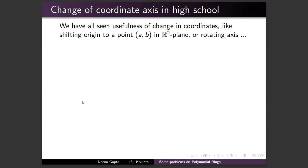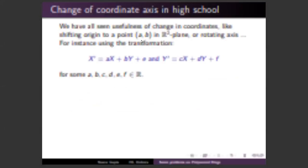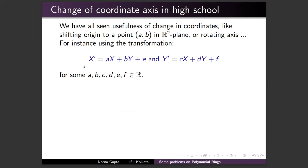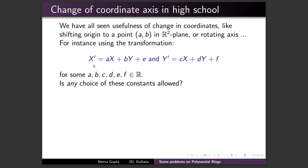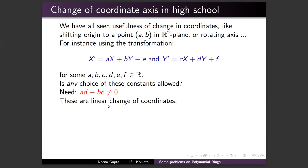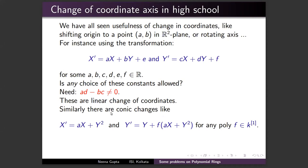In high school we have seen change of coordinates — shifting the origin to a point (a, b) in ℝ², or rotating axes. We use transformations where x' = ax + by + e and y' = cx + dy + f with a, b, c, d, e, f real numbers. But not every choice is allowed — we always need that ad − bc ≠ 0, i.e., the transformation determinant is nonzero. These are called linear changes of coordinates.